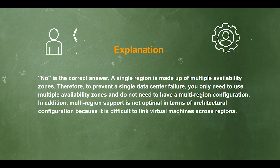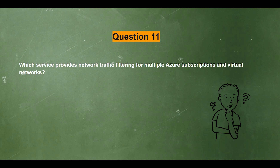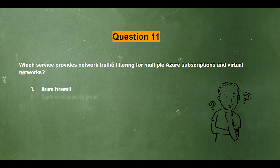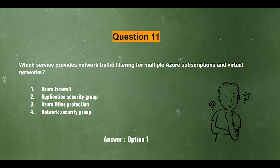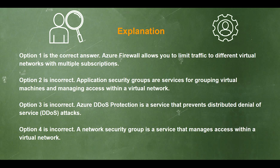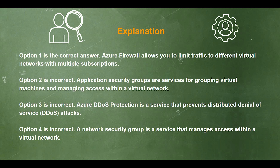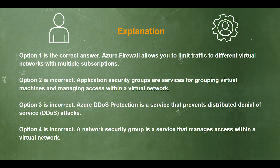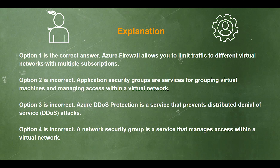Question 11. Which service provides network traffic filtering for multiple Azure subscriptions and virtual networks? Options: 1) Azure Firewall, 2) Application Security Group, 3) Azure DDoS Protection, 4) Network Security Group. The answer is option 1 — Azure Firewall. It allows you to limit traffic to different virtual networks across multiple subscriptions. Application Security Groups are for grouping VMs and managing access within a virtual network. Azure DDoS Protection prevents distributed denial of service attacks. Network Security Groups manage access within a virtual network.